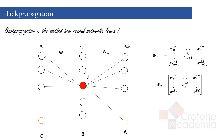Let boldface Xn-1 represent all nodes in layer n-1, Xn represent nodes in layer n, and Xn+1 nodes in layer n+1. Let the superscript of elements in weight matrix W represent the element location and the subscript the layer number. With this notation, to get the input that goes into node j, we take the output of nodes in layer n-1 multiplied by the jth row of the weight matrix Wn.